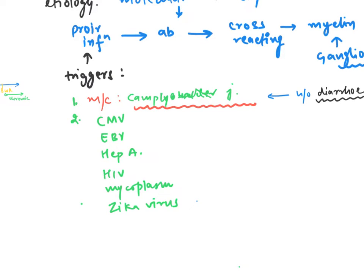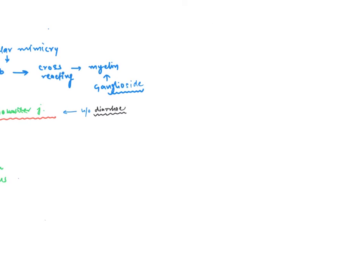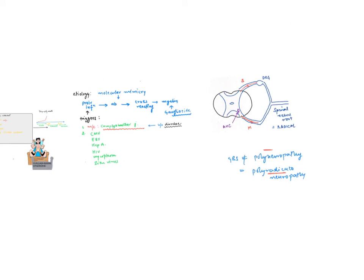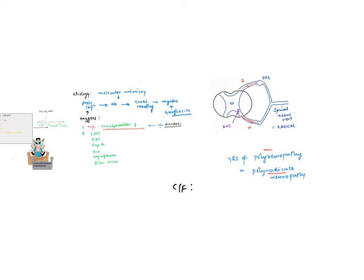Moving forward to clinical features, but first a key point. This is your dorsal root ganglion, sensory root, spinal cord, anterior horn cell, motor root. They combine to form mixed spinal nerve root, which is the radical. The major point is GBS is not equal to polyneuropathy, but GBS equals polyradiculoneuropathy. The radical term is very important because it means radical, plexus, nerves, everything is involved.